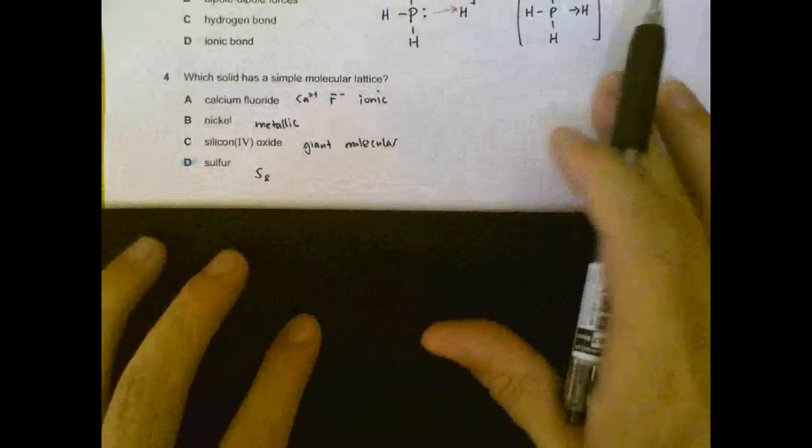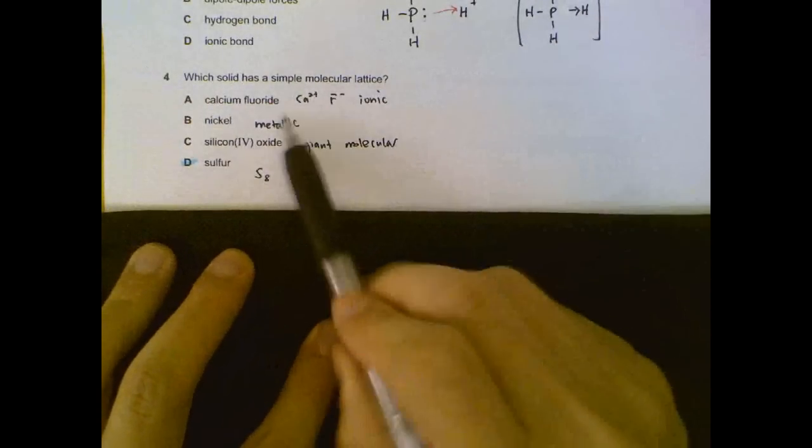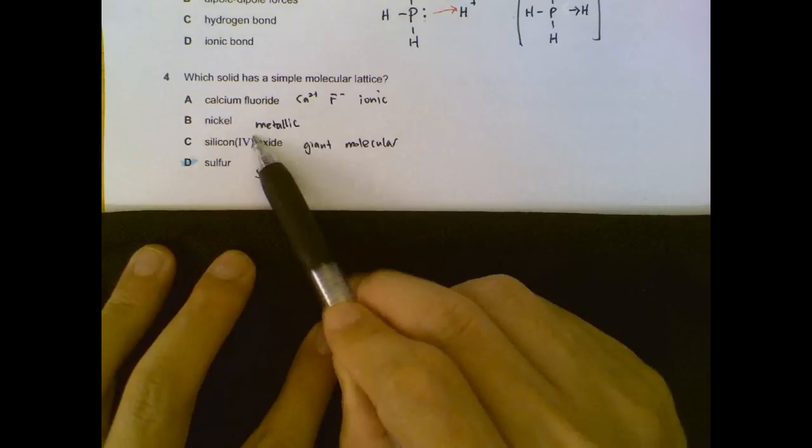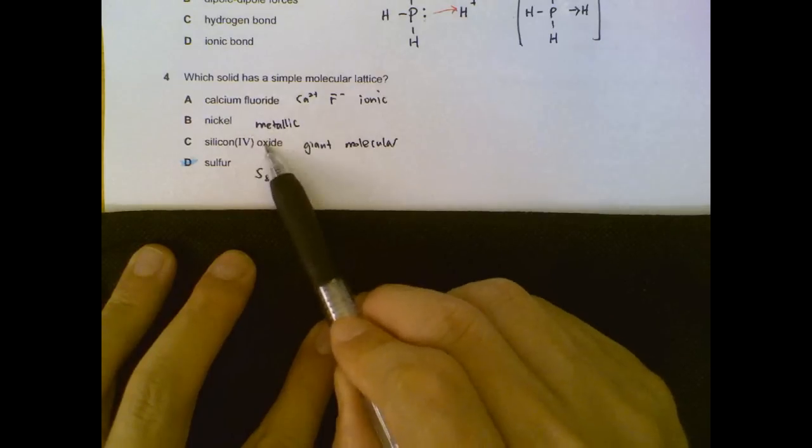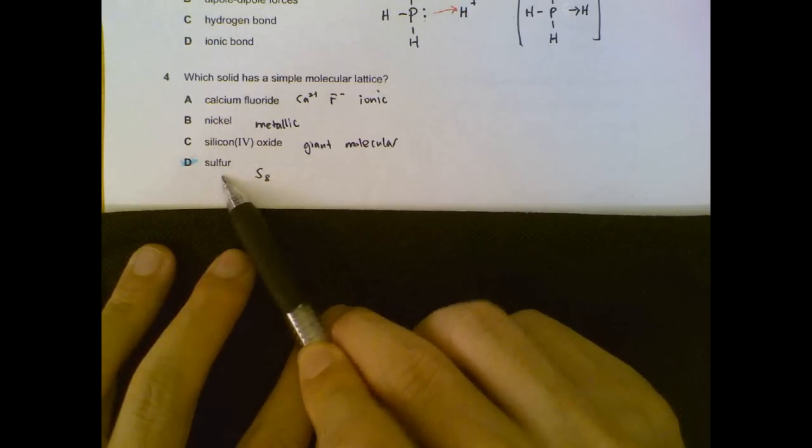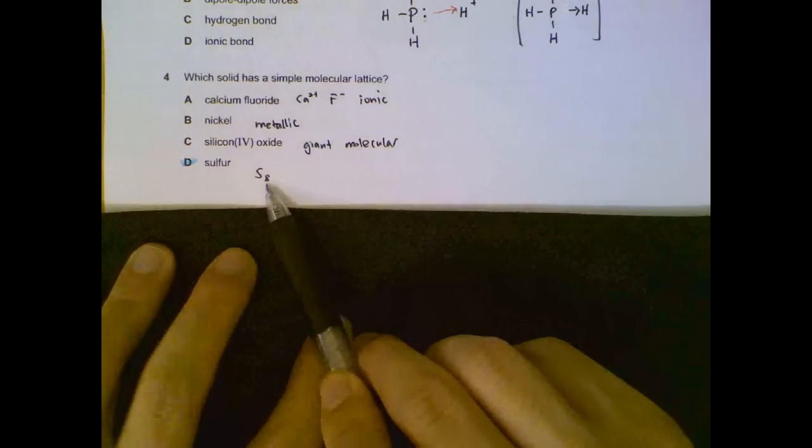Number 4. Which one has simple molecular lattice? We have ionic compound, calcium fluoride, metallic structure, nickel, silicon dioxide or silicon oxide is giant molecular. Sulfur is the one with a simple molecular lattice. This one form will be the one that has 8 atoms joined together.